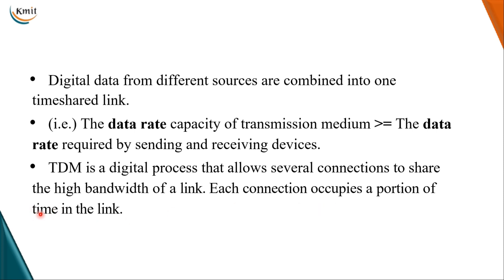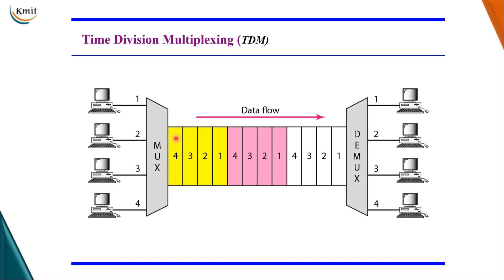In TDM, each connection occupies a portion of time in the link. Device number one occupies one portion of time to use the link, and the second device uses another portion of time. This is time division multiplexing, where we combine multiple signals into a single one.